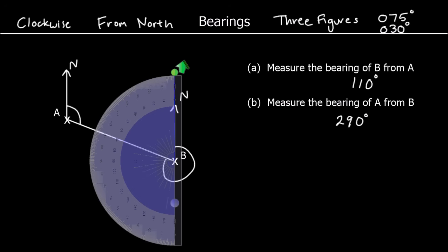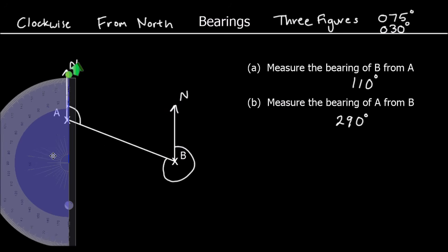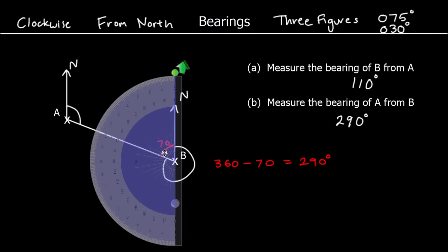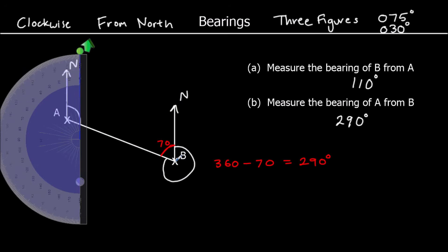But if you don't have a full circle protractor, you could measure the part of the angle that's not included — so measure this angle here, which using the inside scale goes to 70. So if we measure 70 degrees here, we know angles around a point add up to 360, and we can do 360 take away 70 to get 290 degrees. There's also a third way: you can measure this other angle and add 180 onto it. Either way, we're measuring clockwise from north and giving our answer as three figures.